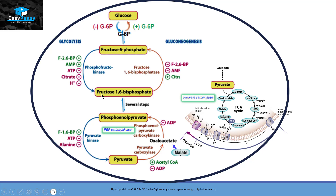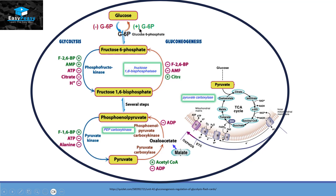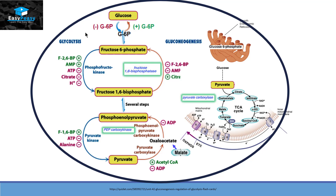The second checkpoint is converting fructose 1,6-bisphosphate back into fructose 6-phosphate. This is done with an enzyme called fructose 1,6-bisphosphatase. The last checkpoint is converting glucose 6-phosphate back into glucose. Glucose 6-phosphate must first go to the smooth endoplasmic reticulum, where the enzyme glucose 6-phosphatase converts it back to glucose. This glucose is then capable of leaving the cell and entering the bloodstream.